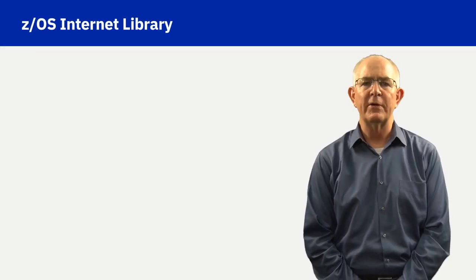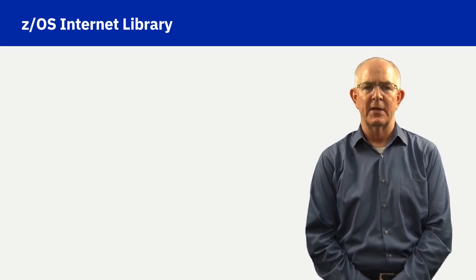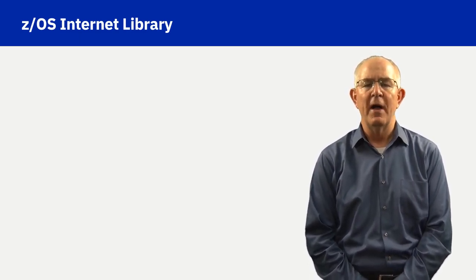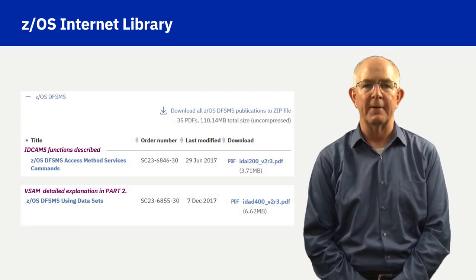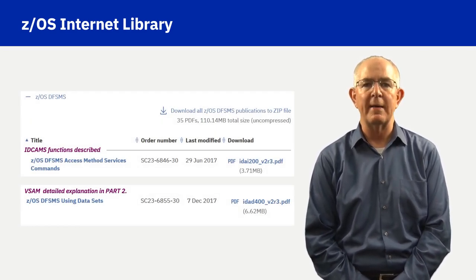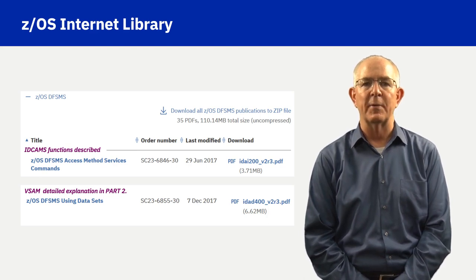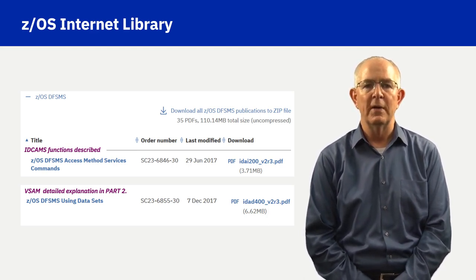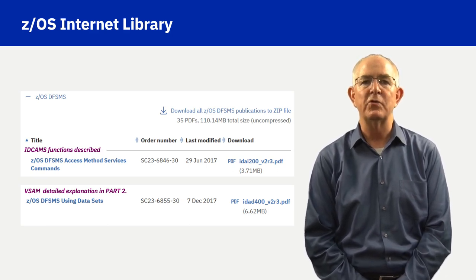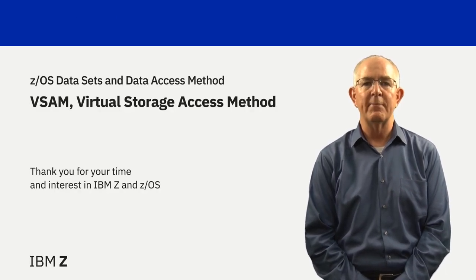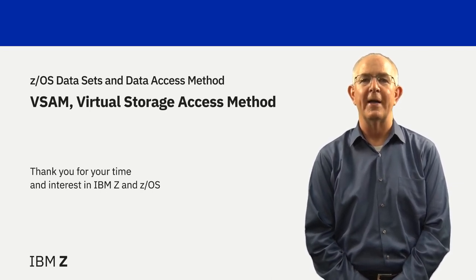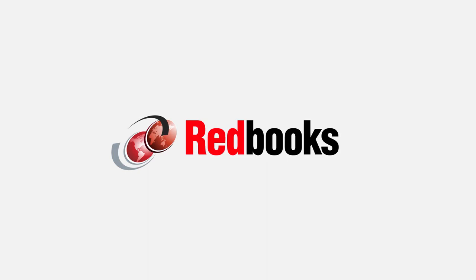While the ZOS Internet Library includes 35 manuals in the DF-SMS bookshelf, I recommend the two manuals on the chart. IDCAMS functions are described in the ZOS DF-SMS Access Method Services Commands manual. A very good detailed explanation of VSAM is in Part 2 of the ZOS DF-SMS Using Datasets manual. In summary, you should be able to differentiate between VSAM and non-VSAM dataset types. Thank you for your time.